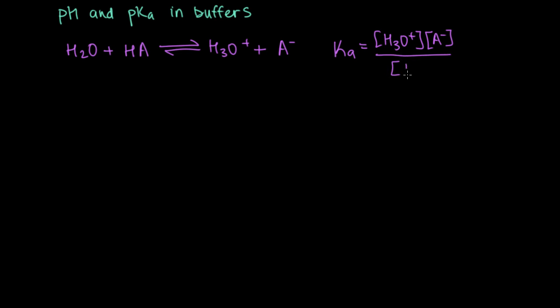Ka is just equal to H3O plus times A minus, all over the concentration of HA, and we don't include water because it's a pure liquid. So we assume that the concentration is always one.